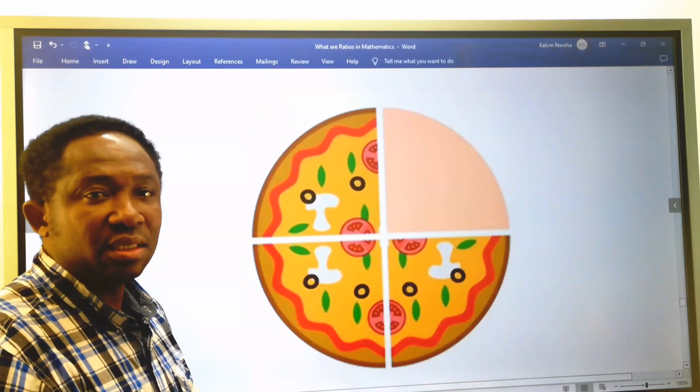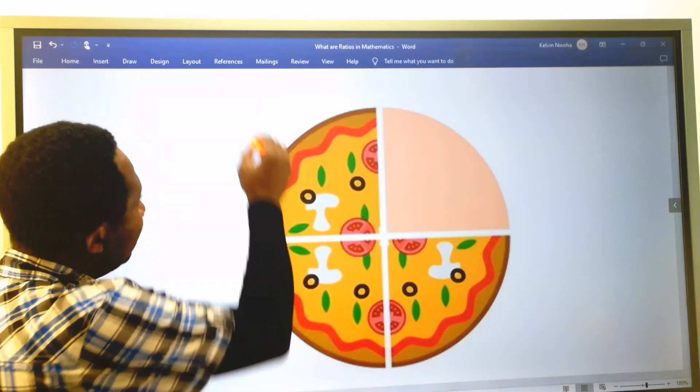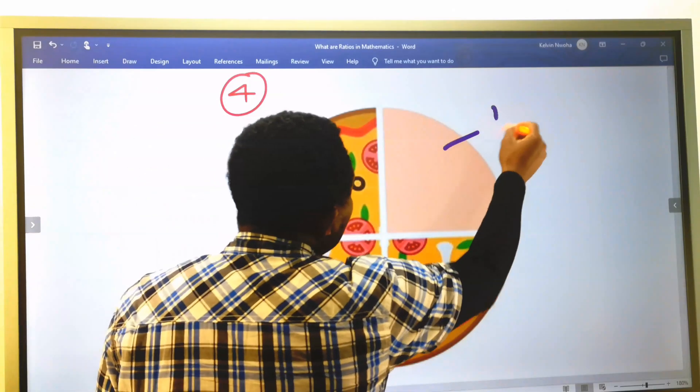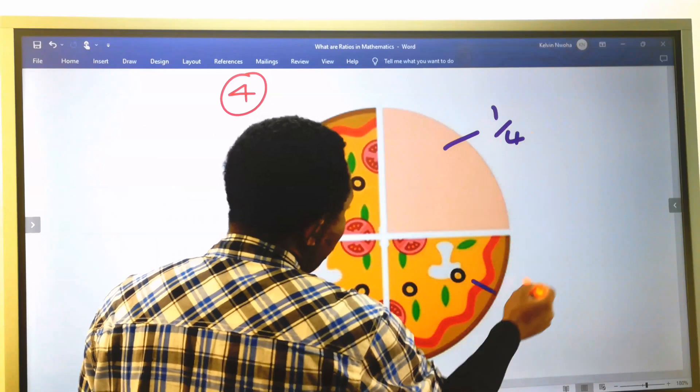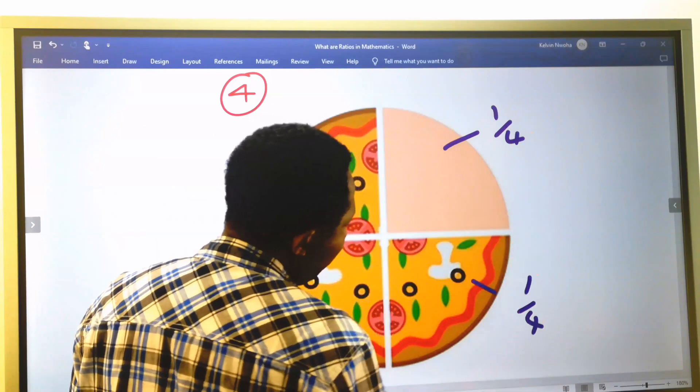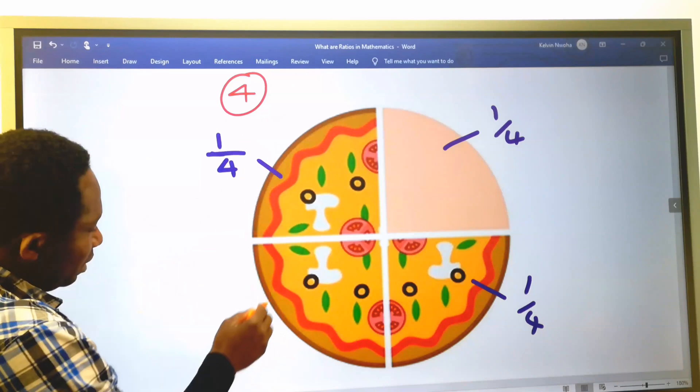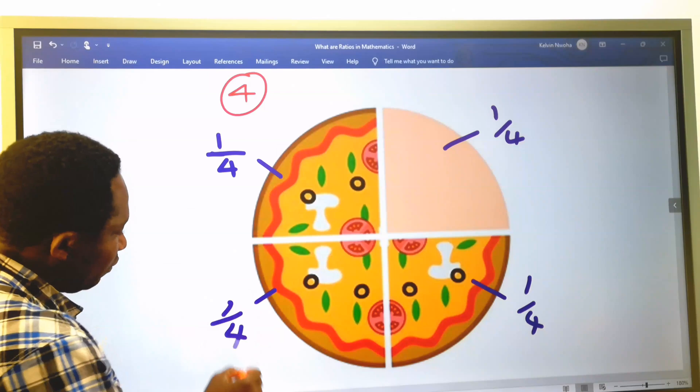Next, if you slice this pizza into 4 parts, each is 1 to ratio 4, 1 to ratio 4, and this is 1 to ratio 4. This is also 1 to ratio 4 for each separate part of the pizza.